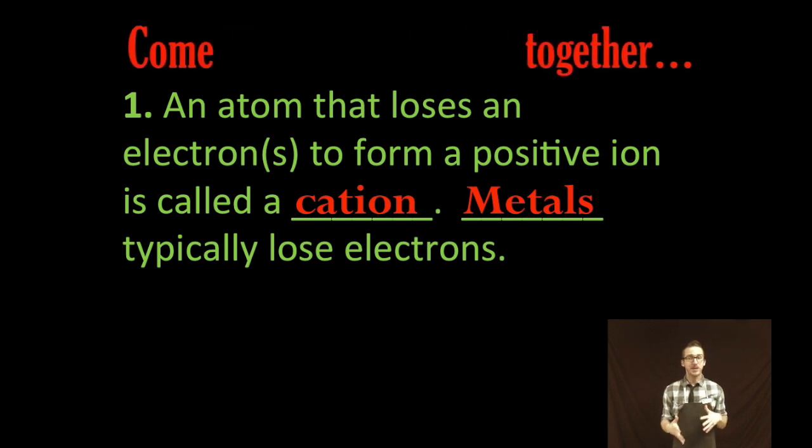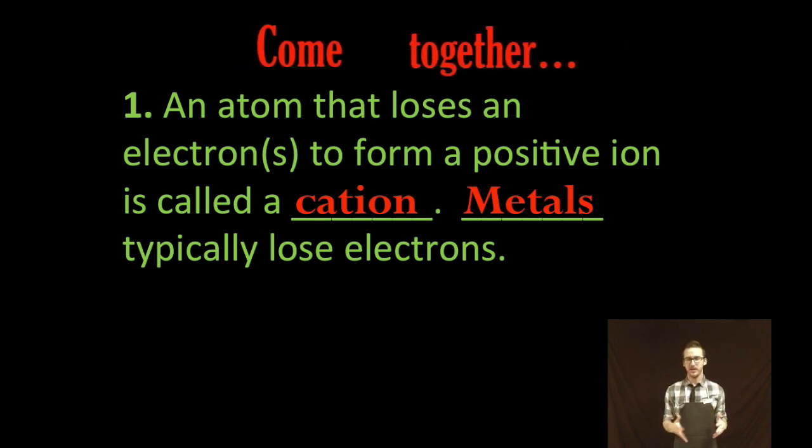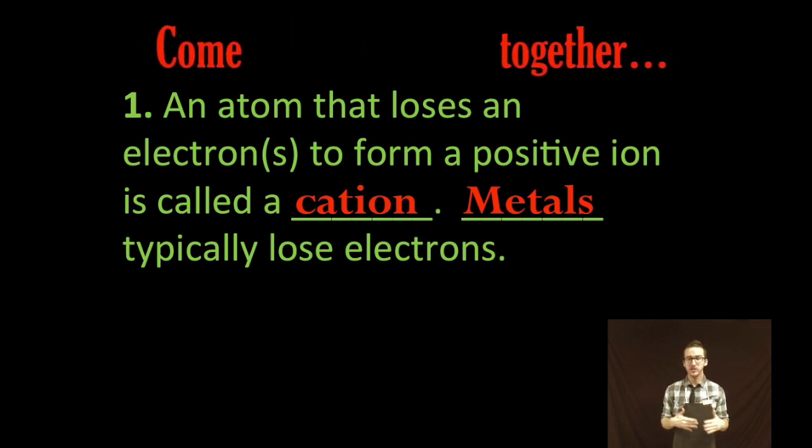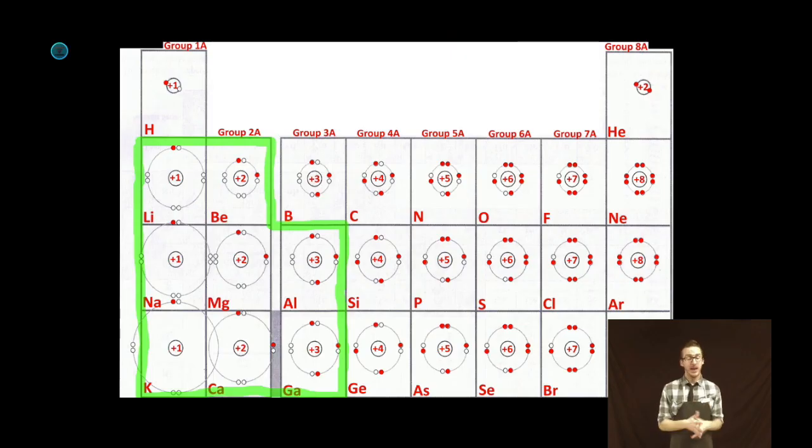Recognize that an atom that loses an electron to form a positive ion is called a cation. And it's generally your metals that typically lose electrons. And as you think about why, and going back to the CVR periodic table, recall that your metals will typically lose their valence electrons because they have relatively low or unattractive core charges.